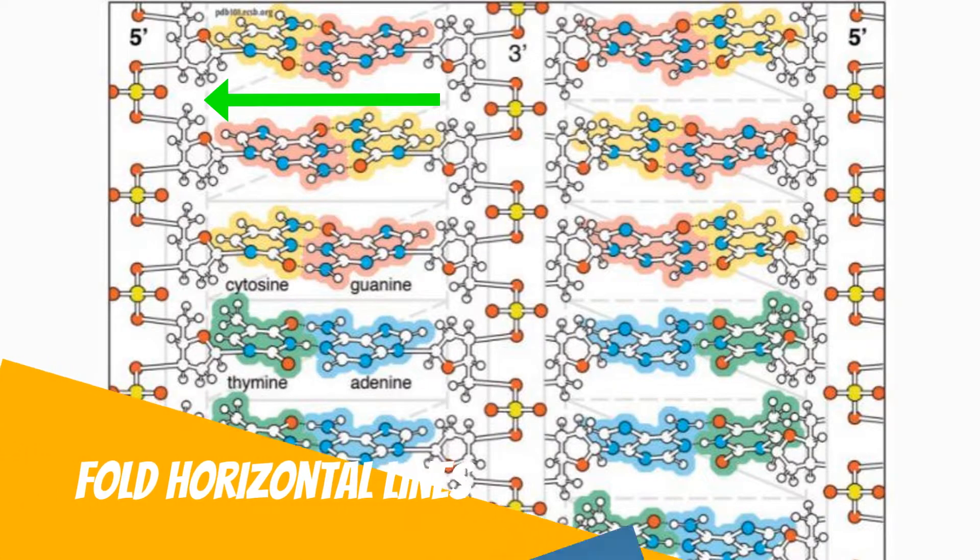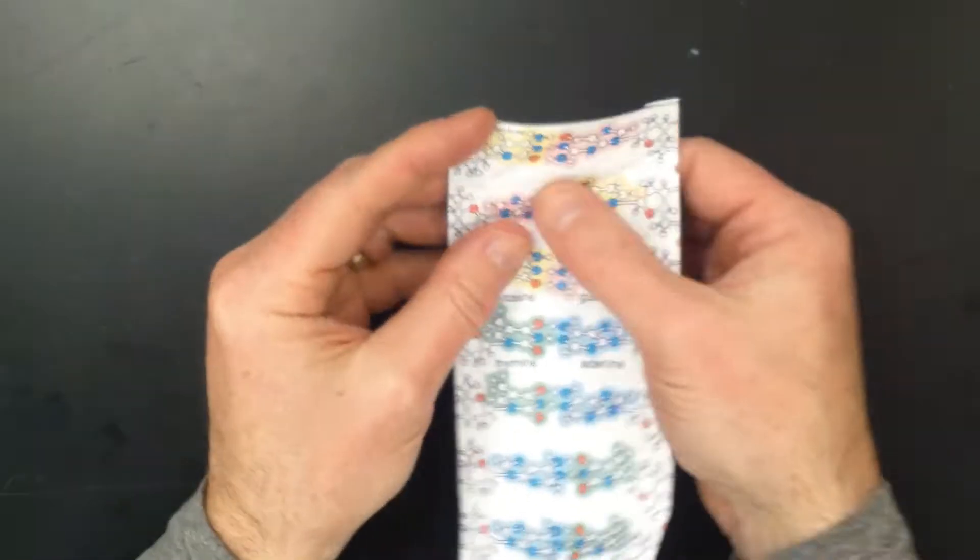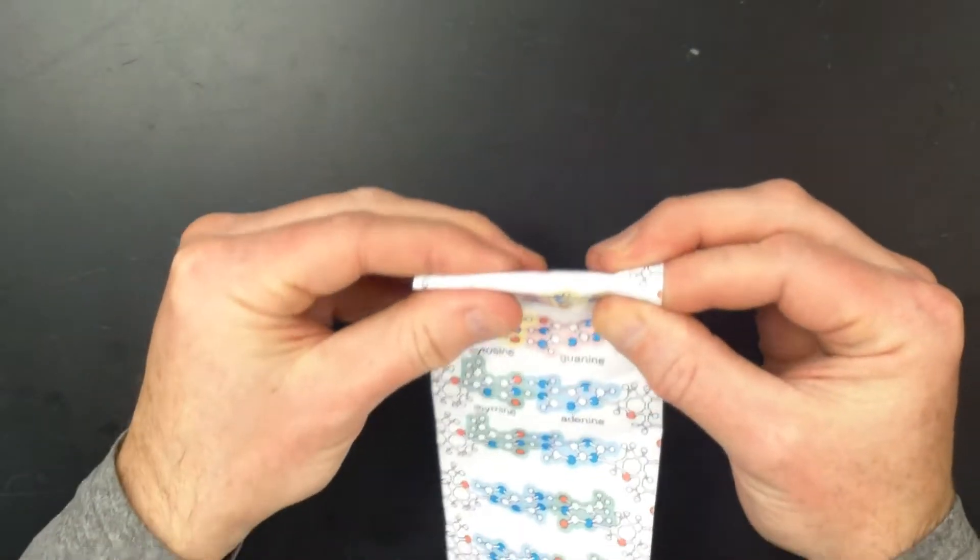Now fold the solid horizontal lines which will make up the steps of the ladder. If you flip the paper you will notice that the horizontal lines are solid on one side and dotted on the other side.